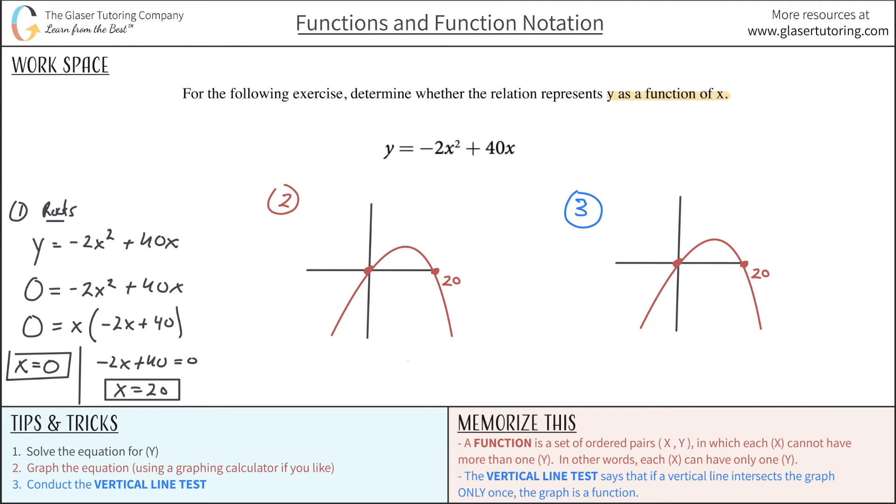So what I do is I draw a couple of vertical lines here. I realize that that vertical line only intersects the graph at that one spot. This vertical line only at that one spot. I'll do one more. That vertical line at only that one spot. So I know that no matter what vertical line I draw, that vertical line will only intersect the graph at one point.